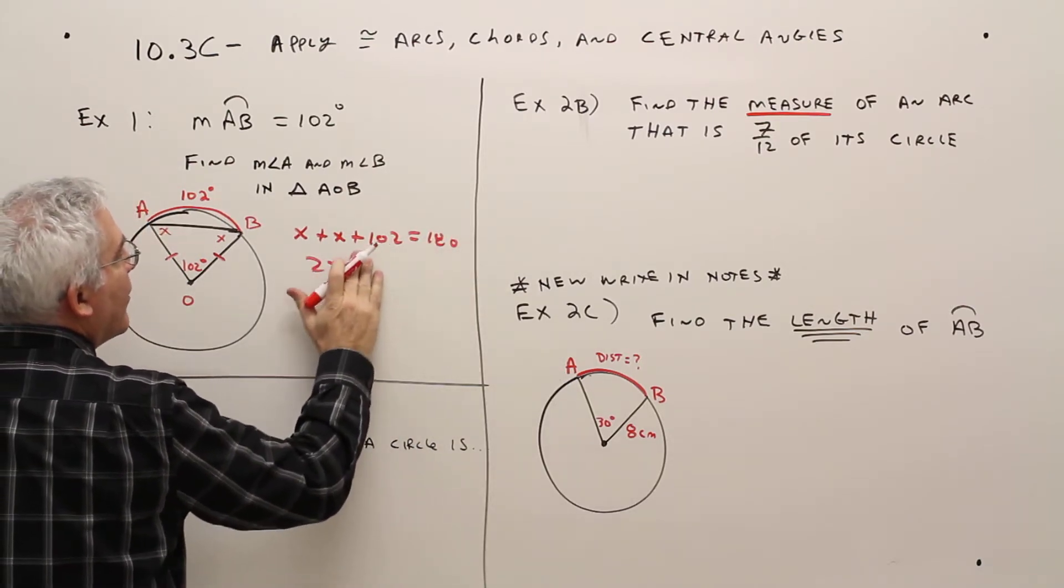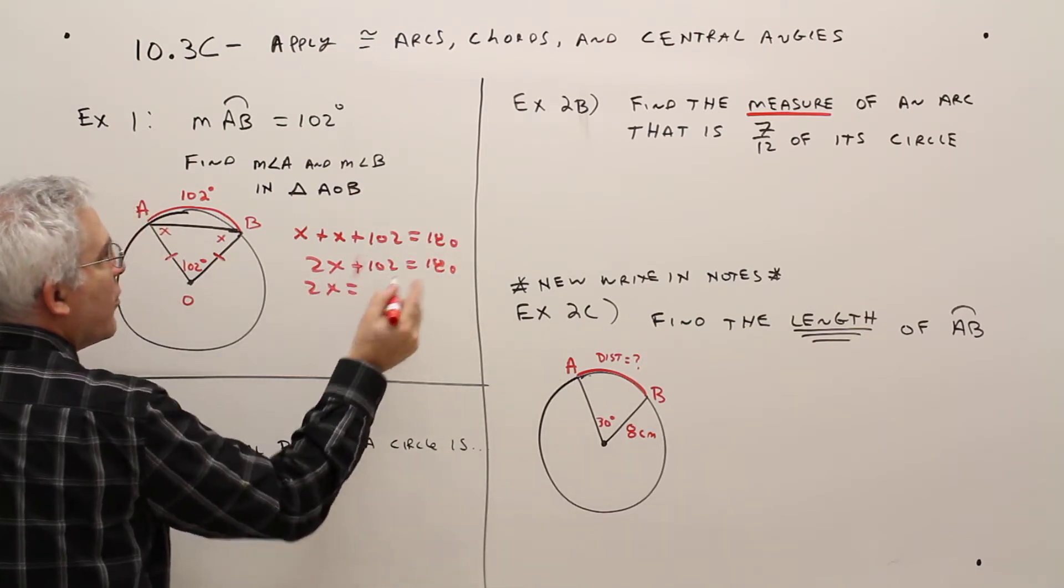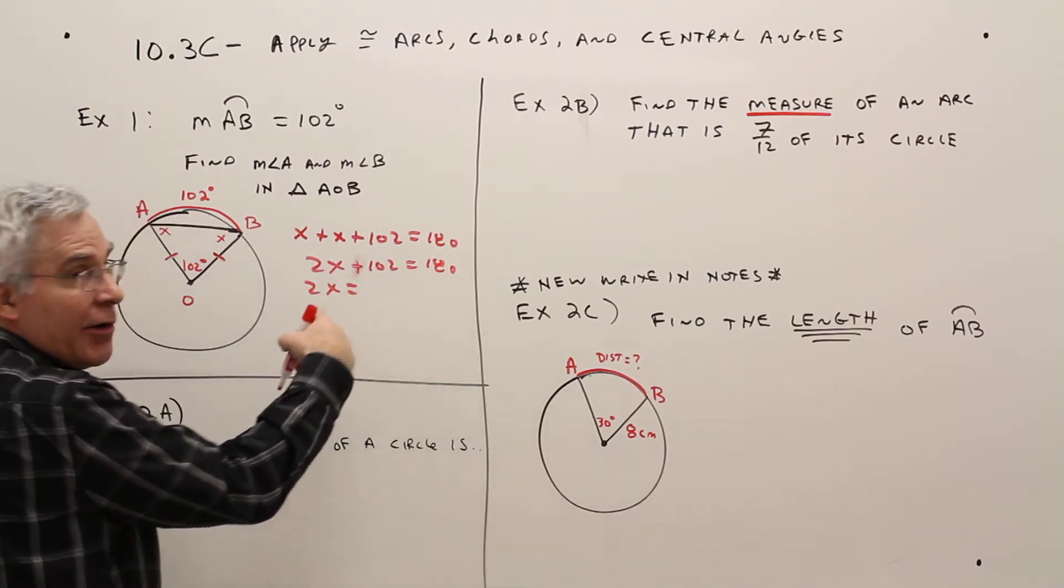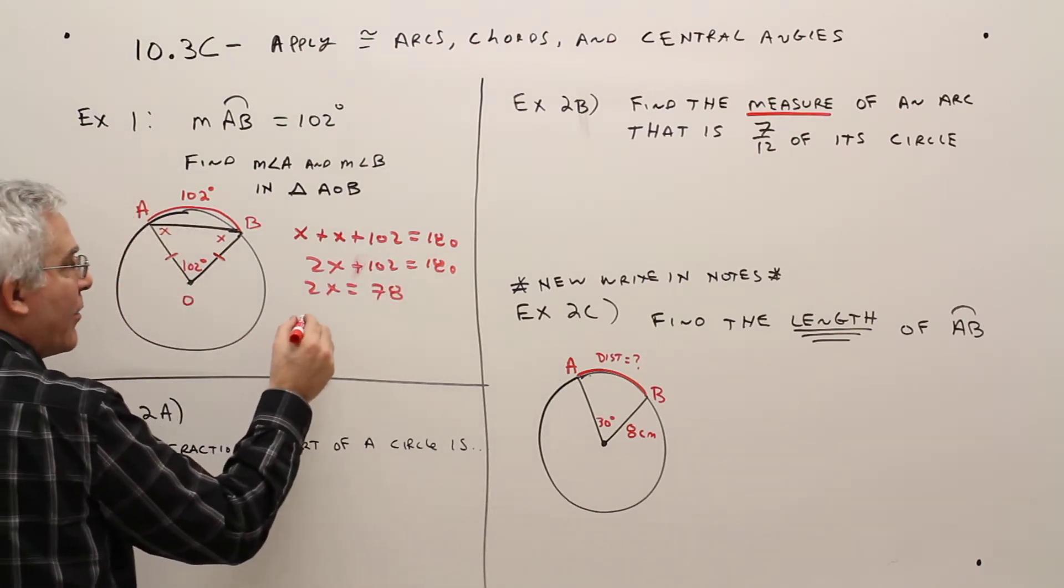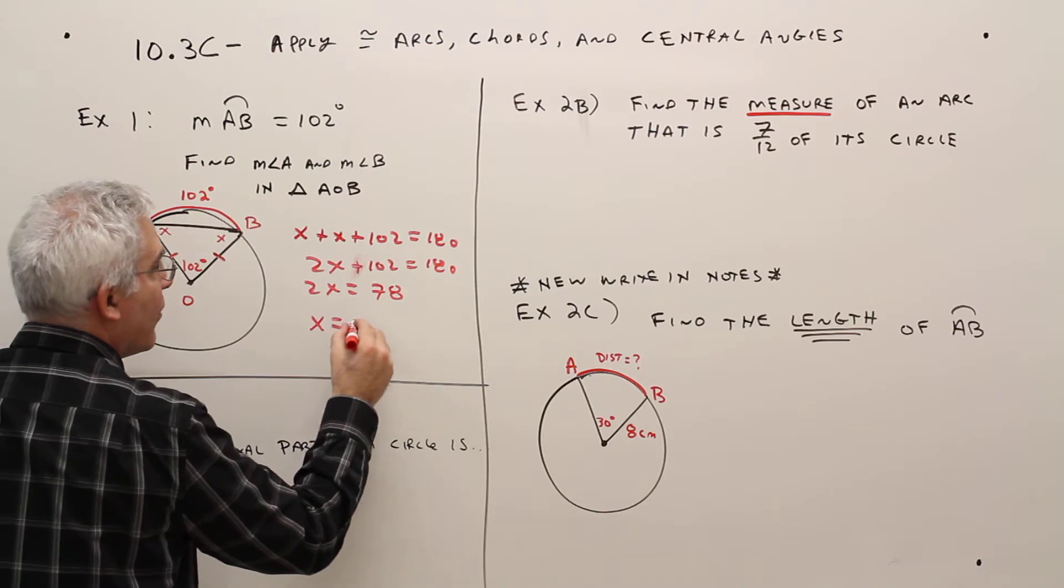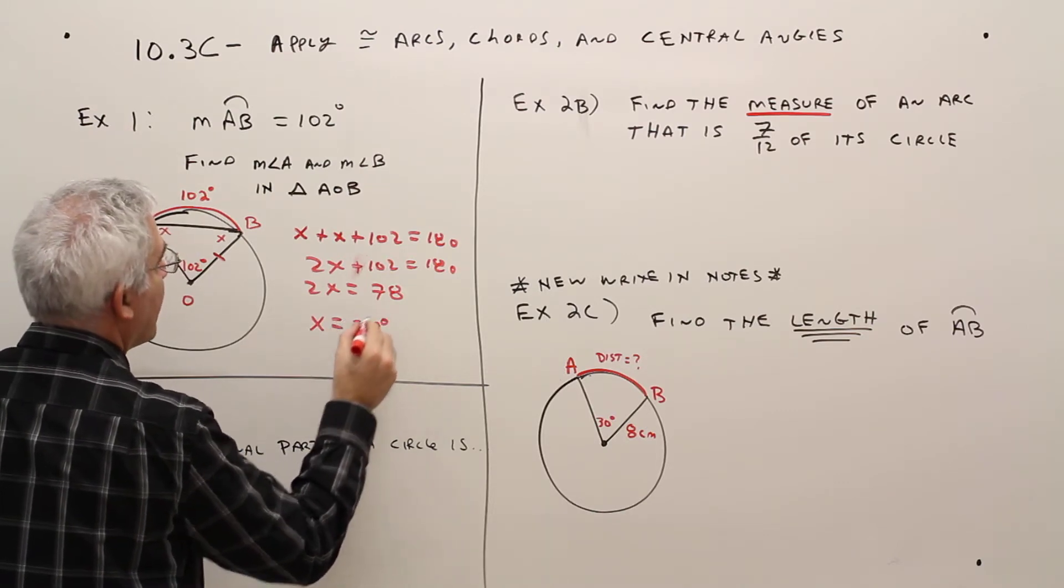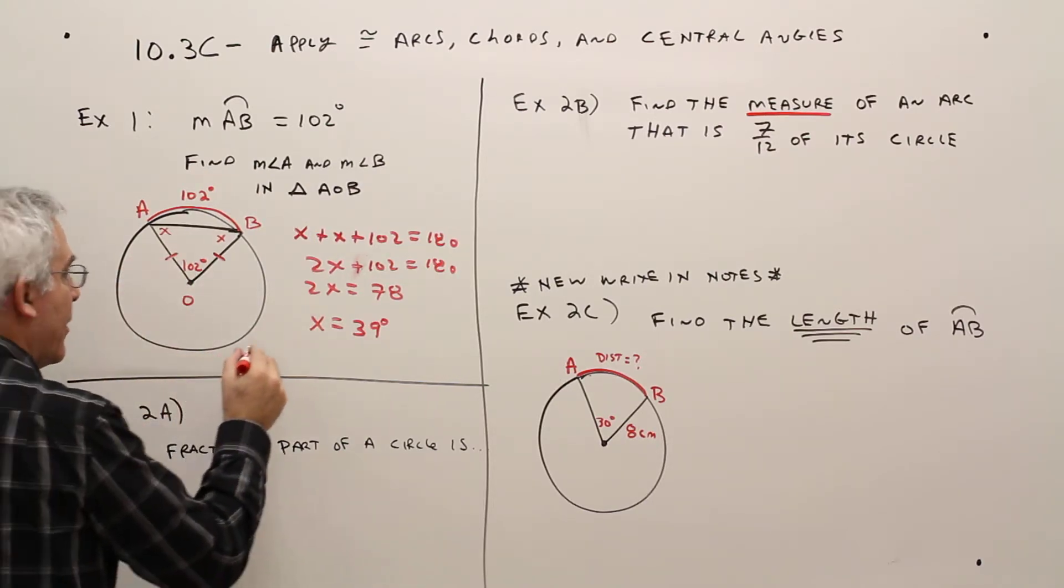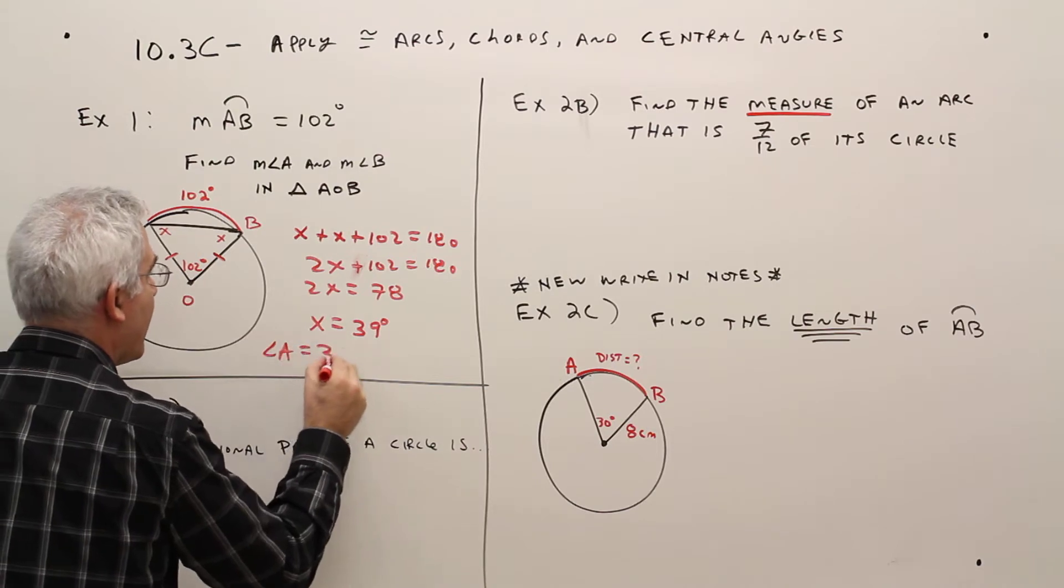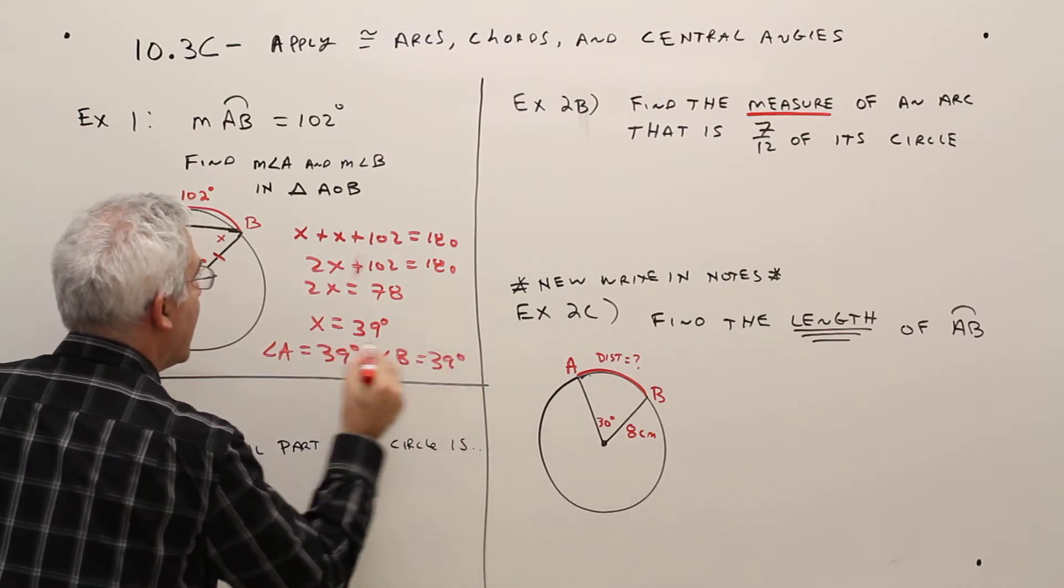2X, I'll just do baby steps, plus 102 equals 180. 2X equals, take away 102 and I get 78. Divide by 2, X equals 39 degrees. And that would be for both measures of angle A and B. So angle A equals 39 degrees and angle B equals 39 degrees.